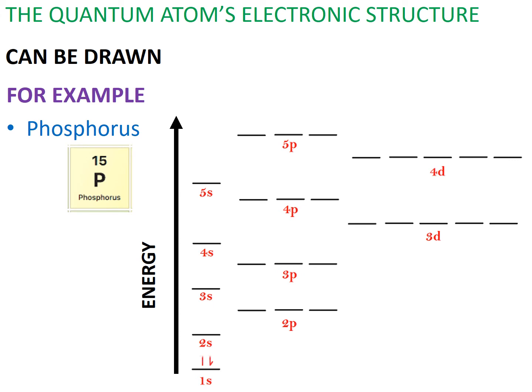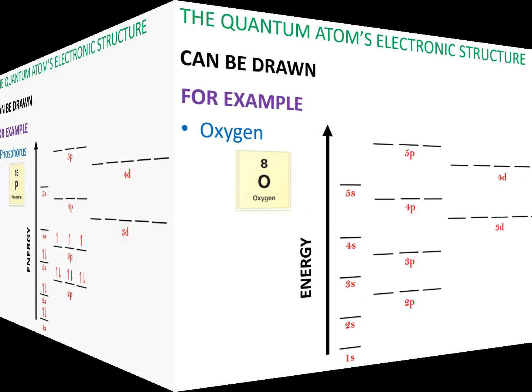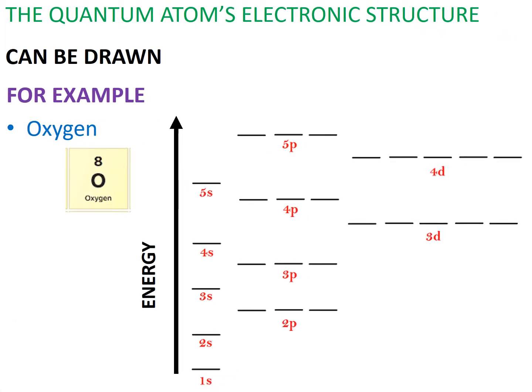The same rules and method apply when drawing the electron configuration for something a little more simpler, like phosphorus. Or even more simpler, oxygen.